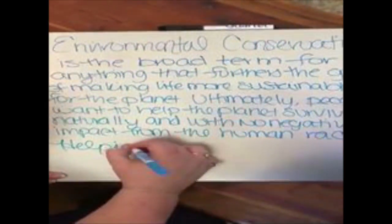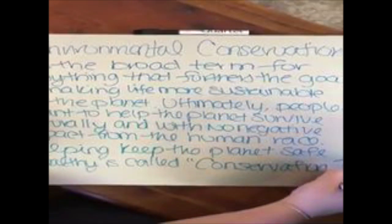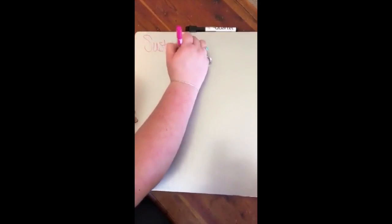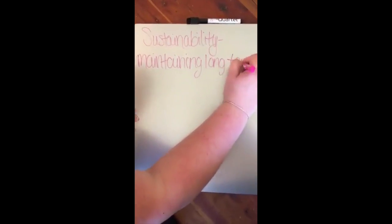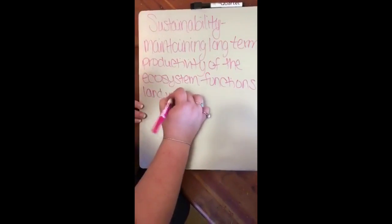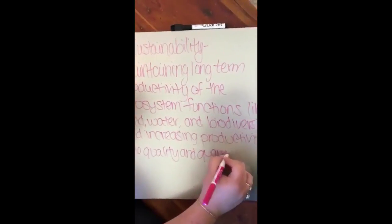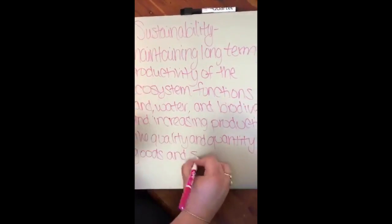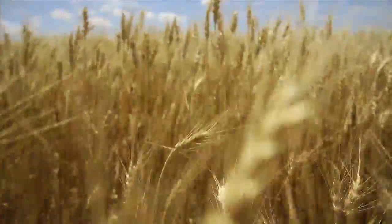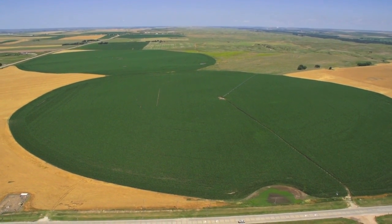Sustainable land management includes maintaining long-term productivity of the ecosystem functions — land, water, and biodiversity — as well as increasing productivity in terms of quality, quantity, and diversity of goods and services. The way we can better manage agriculture is by being more organically sustainable. Management methods include crop rotation, planting more diverse crops, and limiting the amount of pesticides we use on our crops.